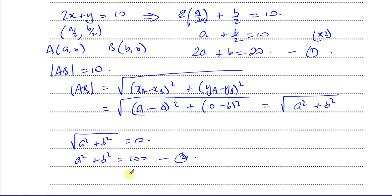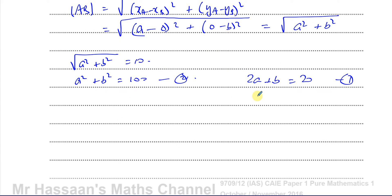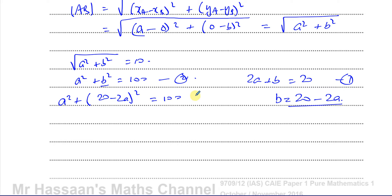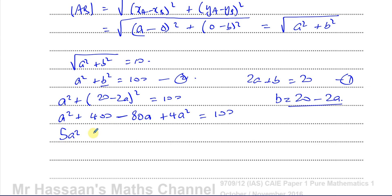Solving equations 1 and 2 simultaneously: from equation 1, b = 20 − 2a. Substituting into equation 2: a² + (20 − 2a)² = 100. Expanding: a² + 400 − 80a + 4a² = 100. Combining like terms: 5a² − 80a + 300 = 0.